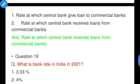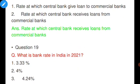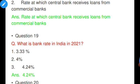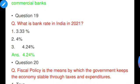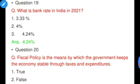Question number nineteen: What is the bank rate in India in 2021? Options: 3.33%, 4%, 4.24%. Option three is correct — 4.24% is the bank rate in India in 2021.